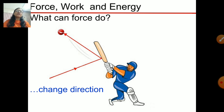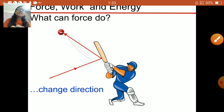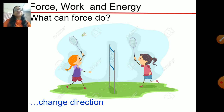Force can also change the direction of an object. Here a ball is coming in one direction and when a batsman strikes it, it goes in another direction. By applying force, the batsman has changed the direction of the ball. Similarly, in badminton, when you hit a shuttlecock it changes direction and goes to the other player.